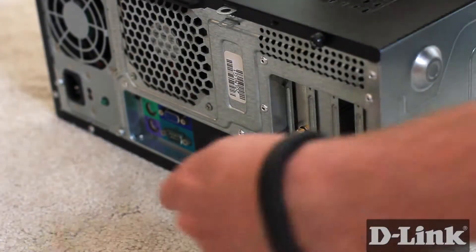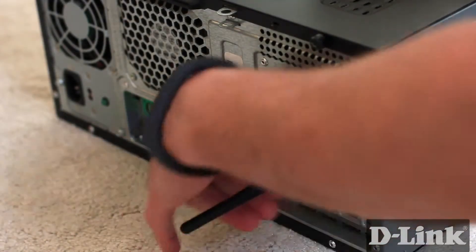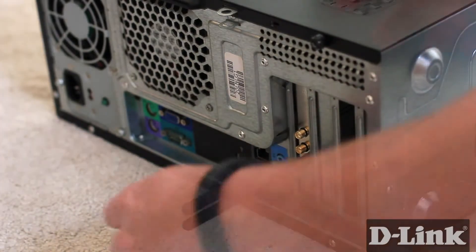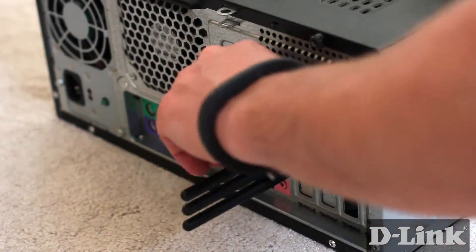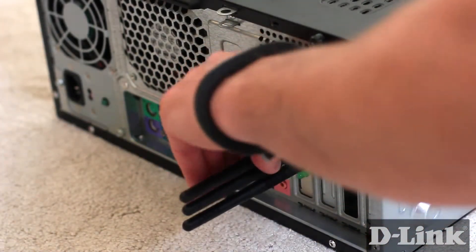Next, looking at the back, you'll see a couple of new connections where you installed the DWA-556. Take the three antennas and screw them into the three available connectors. And that's it! You've installed the DWA-556.